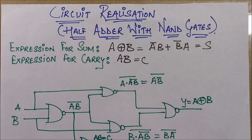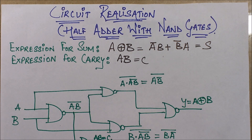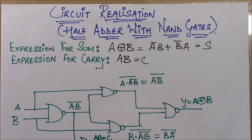Hello friends. In this session I'll be discussing a question on circuit realization with the help of NAND gates. In this particular example I'll be discussing how we formulate and construct a half adder using NAND gates. In the previous video session we discussed the minimum number of NAND gates required to construct some logical expression. In this session I'll directly take up the sum and carry expression, as the main motive here is the circuit realization to construct a circuit.